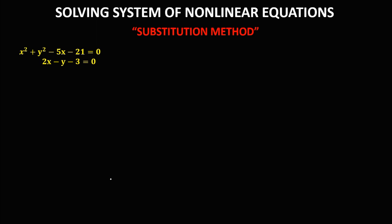From the given equation, observe there are like terms — terms with the same variables and the same exponents. Using the elimination method, we can eliminate one variable, but in the system we still have two variables left. Therefore, we cannot use the elimination method to find the solution of this equation. So we're going to use the substitution method.